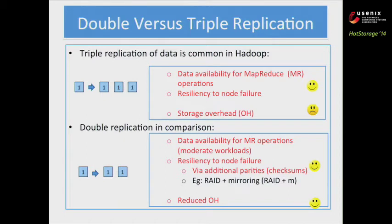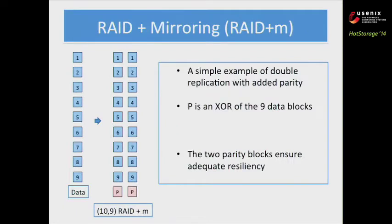An issue with having only two copies is that it does not have the required resiliency to node erasure. But that can be easily addressed by adding some extra parities or checksums. So in this talk, we will discuss erasure codes which have two copies and which add extra parities to ensure resiliency. Let's start with a very simple erasure coding scheme, called Rate-Plus-M in literature.